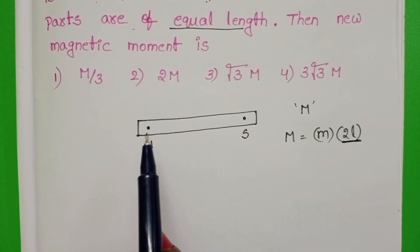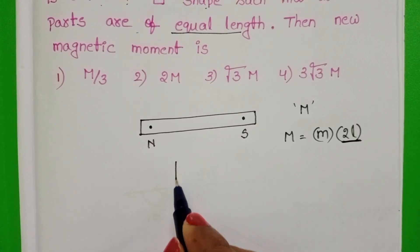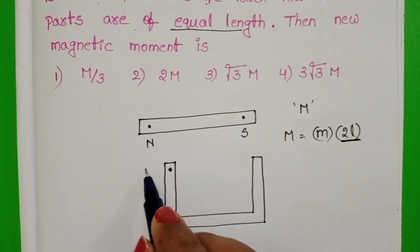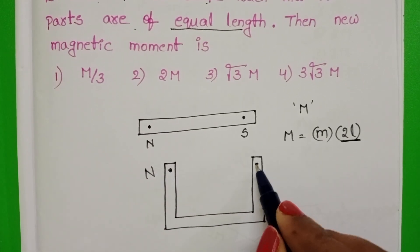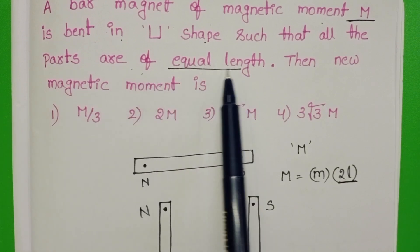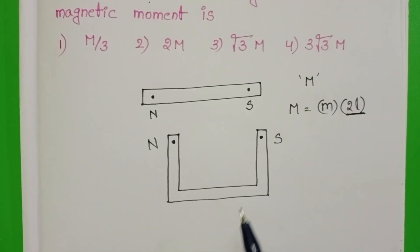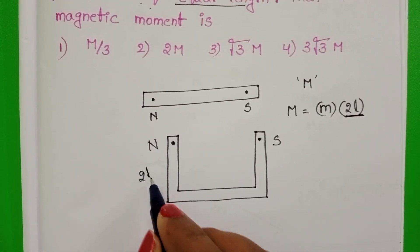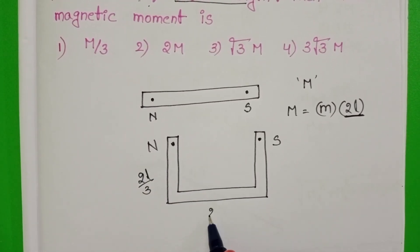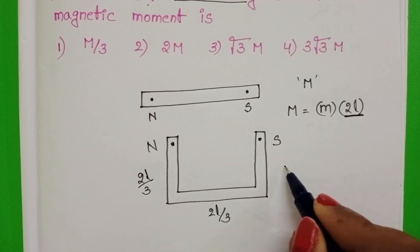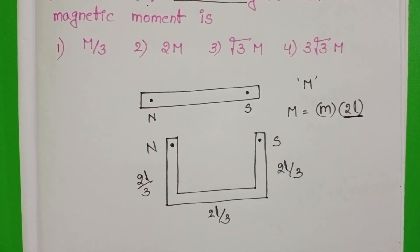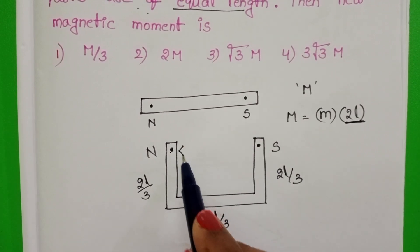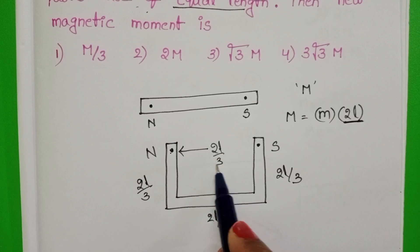Now this bar magnet is bent in a U-shape. So this is the north pole and this one is the south pole. Each part is of equal length. So the total length 2L divides into 3 parts. The length of the first part is 2L/3, the second part is 2L/3, and the third part is also 2L/3. So the length between the north pole and south pole is 2L/3.